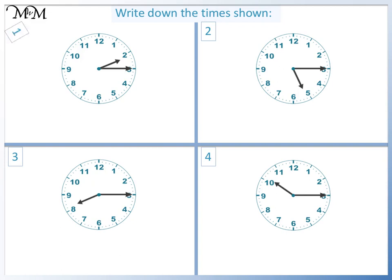Question one. The minute hand is pointing to three. So, it's quarter past. The hour hand has moved past two. So, the time is quarter past two.